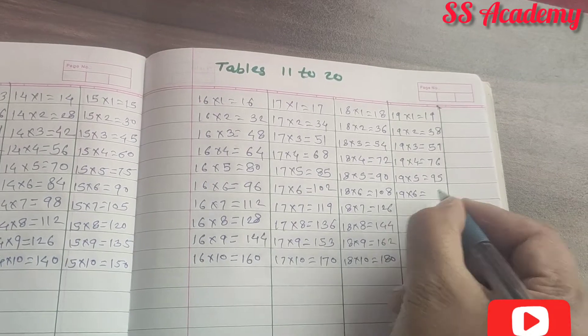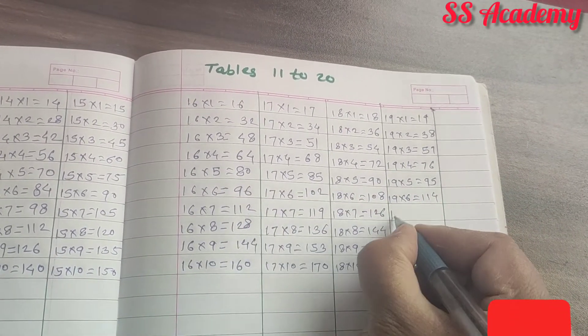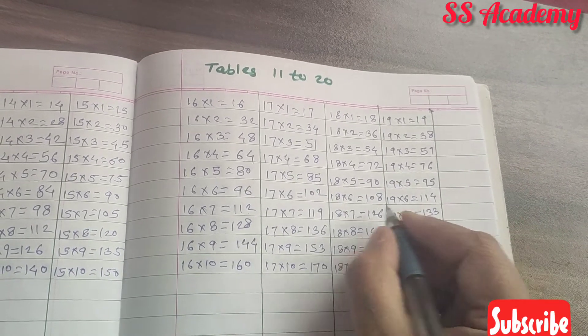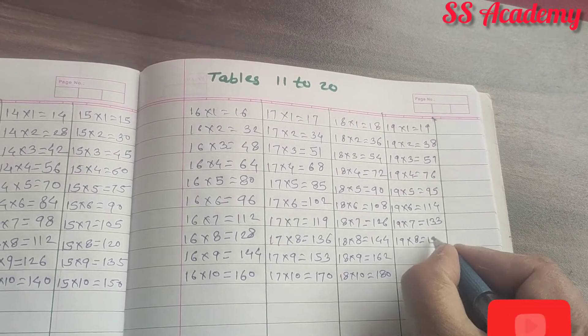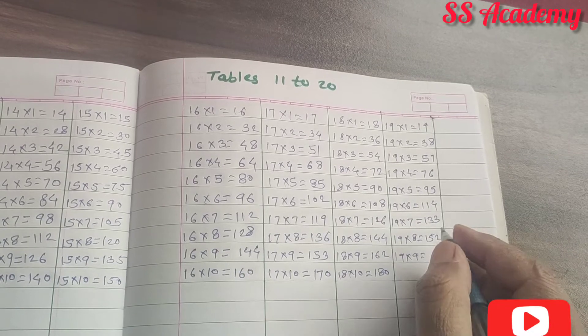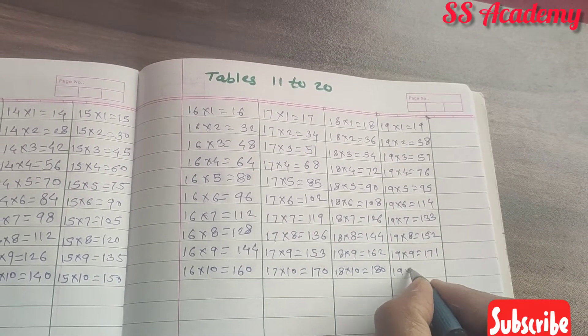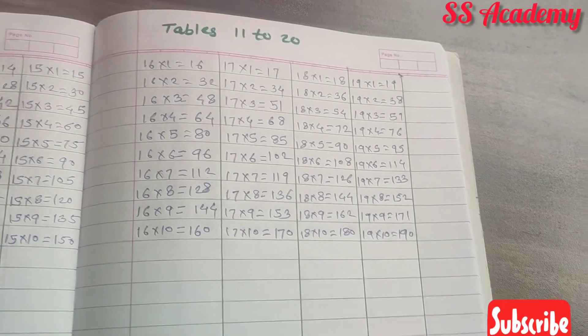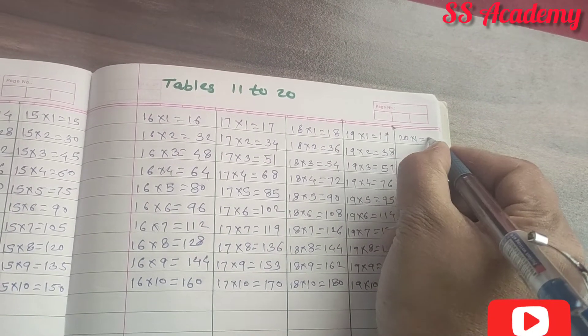19 times 6 is 114. 19 times 7 is 133. 19 times 8 is 152. 19 times 9 is 171. 19 times 10 is 190.